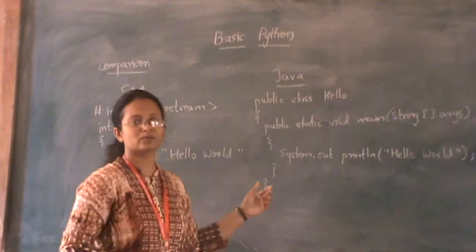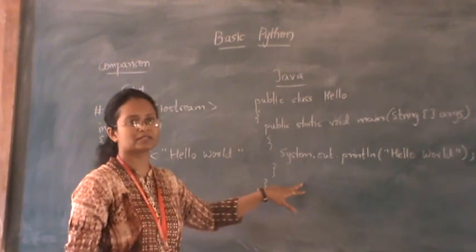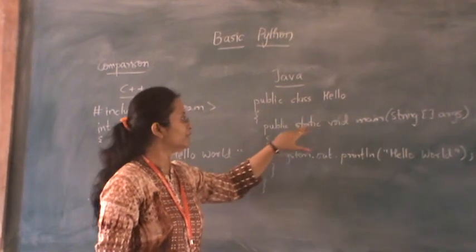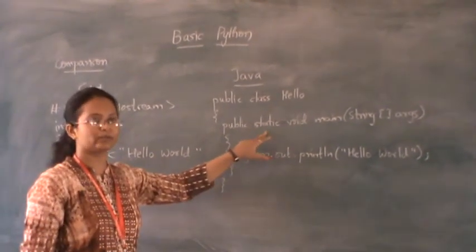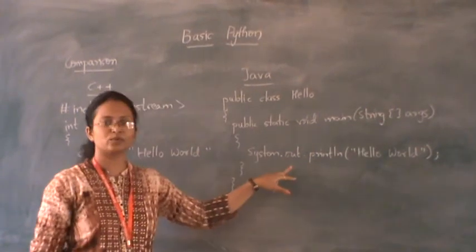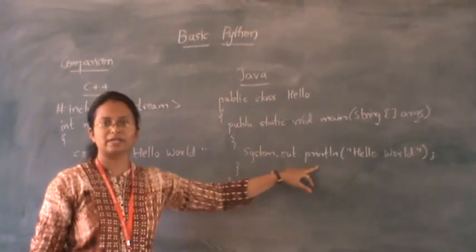This is a simple Hello World program that will be displayed in Java where we need to write a class, public class Hello, we need to write a main method, public static void main string arguments. Then to print the output we use the system.out.println statement.